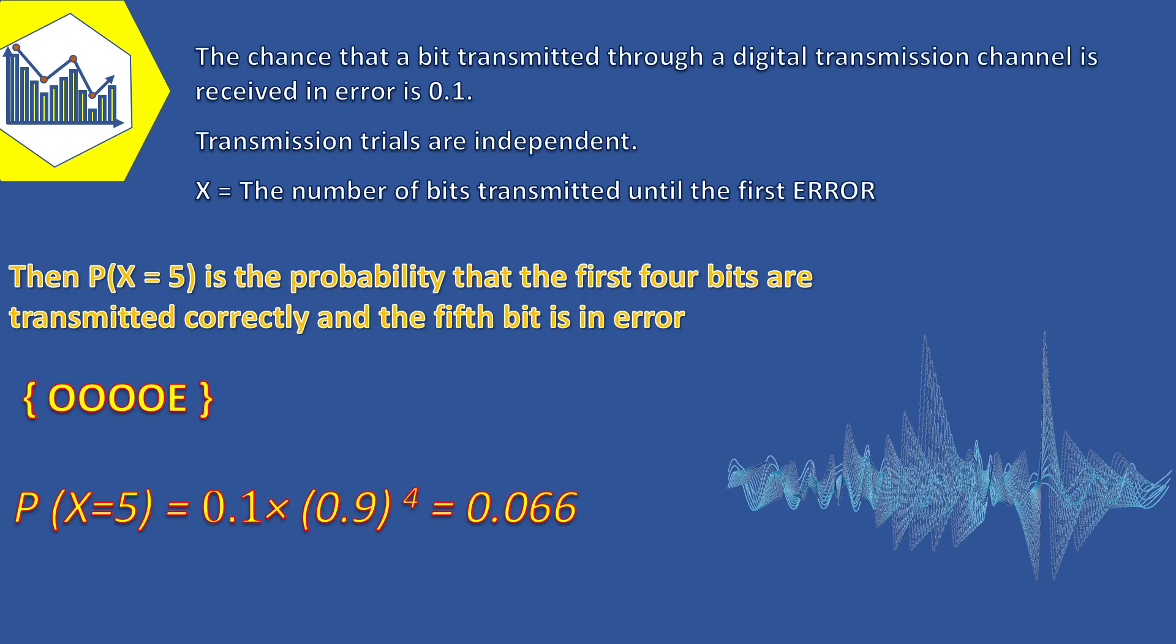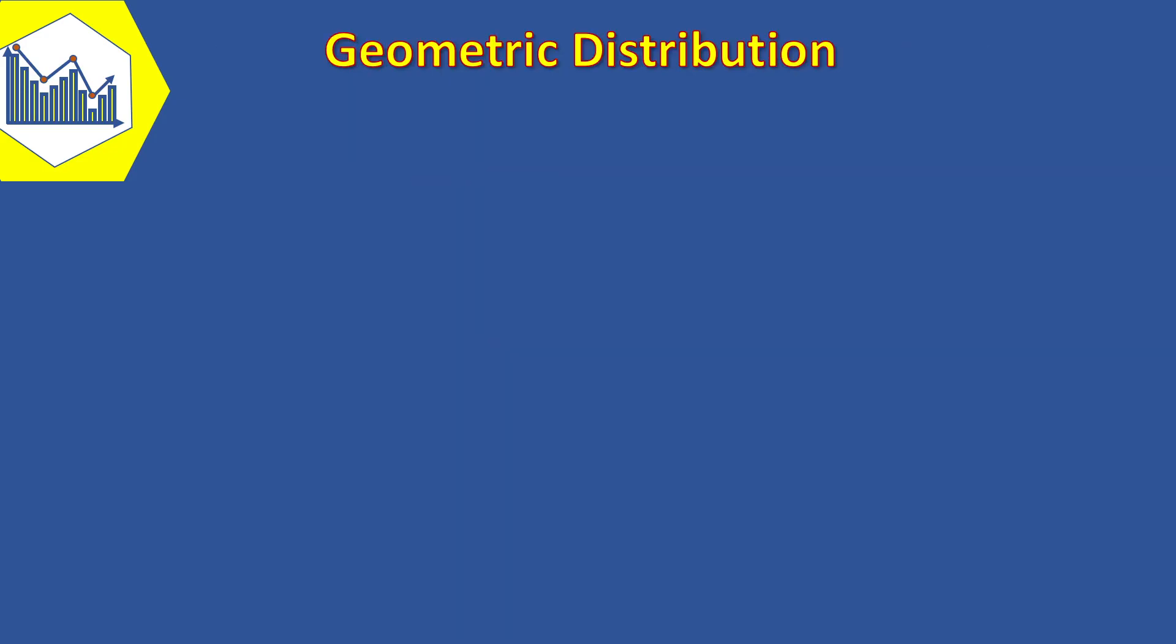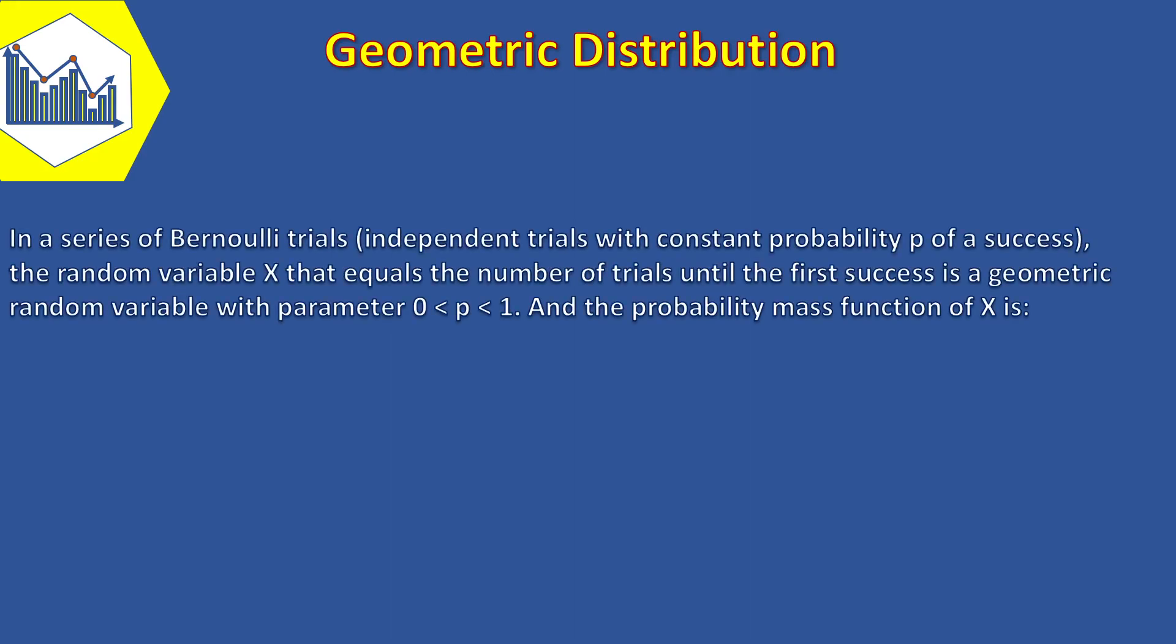Now let's see what the geometric probability mass function is. In a series of Bernoulli trials, that is independent trials with constant probability p of success, the random variable X that equals the number of trials until the first success is a geometric random variable with the parameter p that is between 0 and 1. And the probability mass function of geometric distribution is equal to (1 minus p) to the power of (x minus 1) times p.